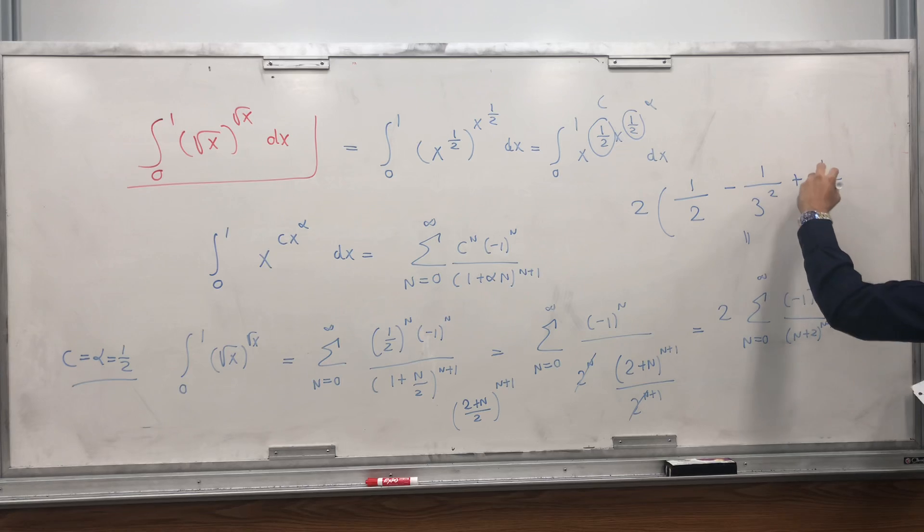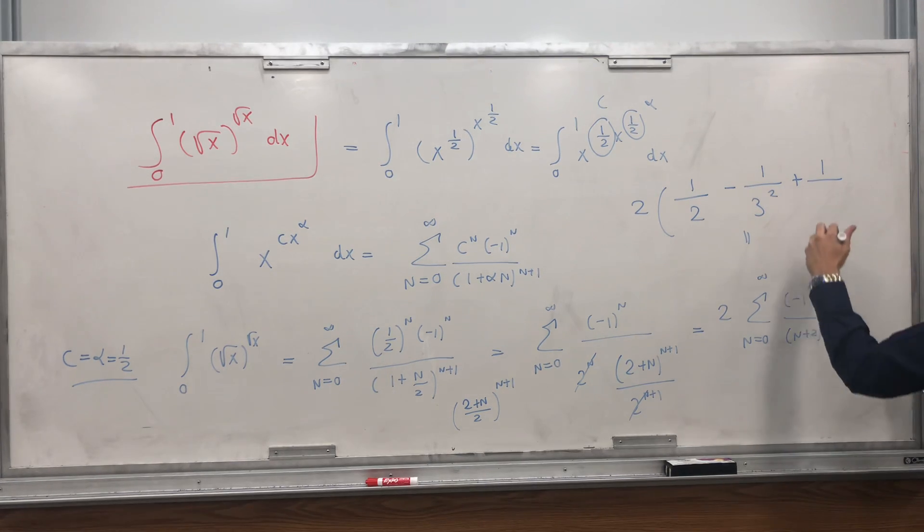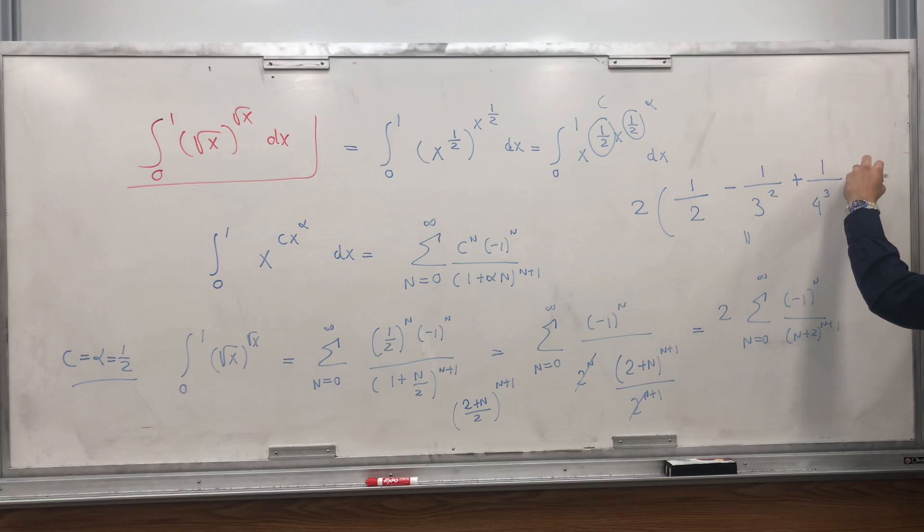And then plus 1 over 4 to the third, and then I guess minus 1 over 5 to the fourth, et cetera.